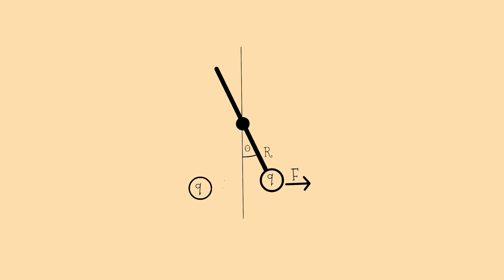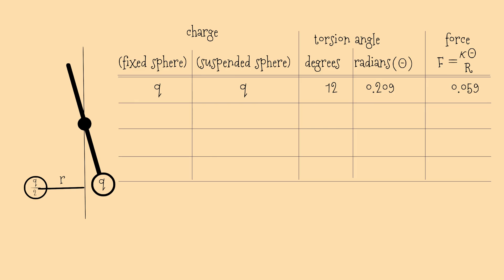Now let's vary the charges while keeping R constant. Bring in a third neutral brass ball. Touch it to the fixed charge sphere. Charge halves, now Q by 2 on the fixed one while the suspended holds Q. Measure the new theta and force. Repeat by sharing charge further, halving again and again for more data points.